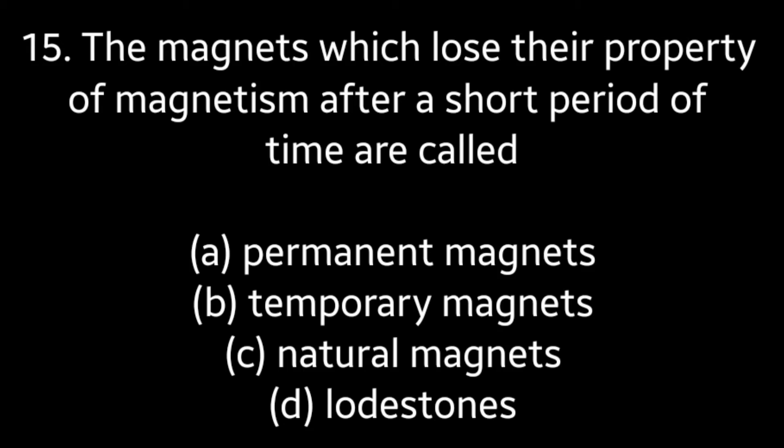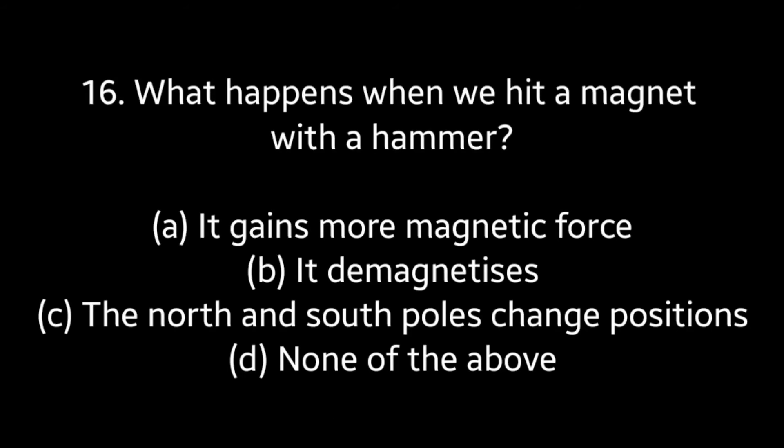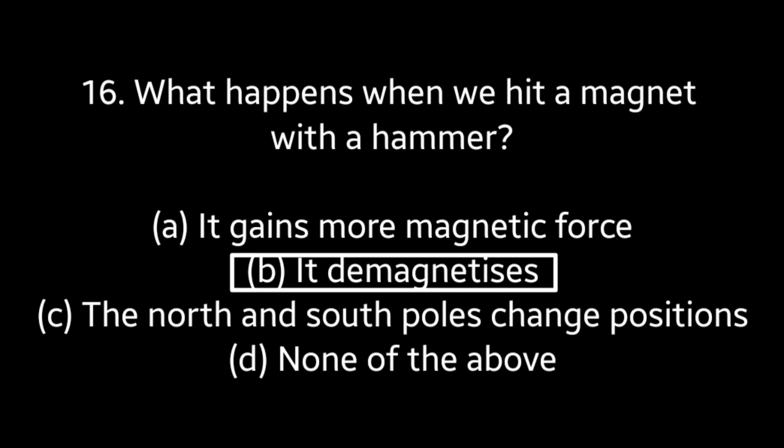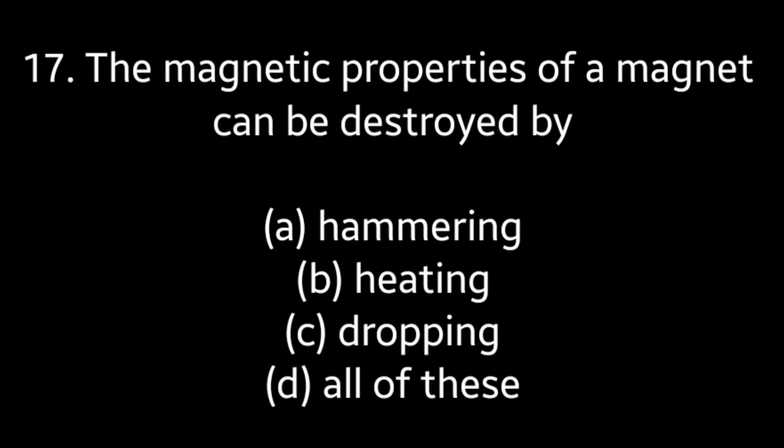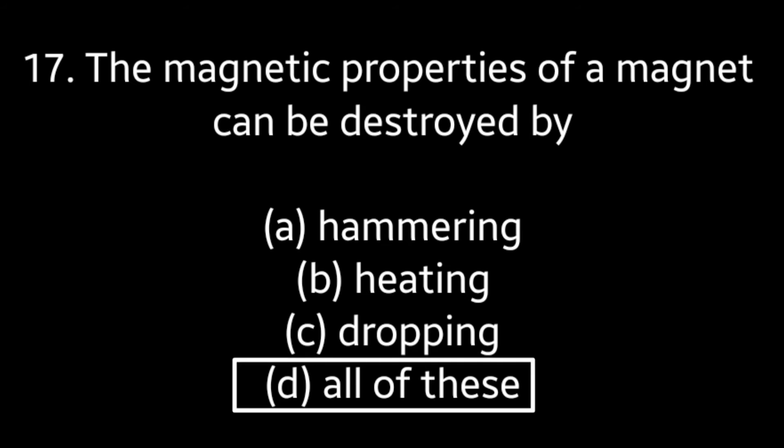Answer to question fifteen is option B: temporary magnets. Question number sixteen: what happens when we hit a magnet with a hammer — it gains more magnetic force, it demagnetizes, the north and south pole changes positions, or none of the above? Answer is option B: it demagnetizes. Question number seventeen: the magnetic properties of a magnet can be destroyed by — hammering, heating, dropping, or all of these? Answer is option D: all of these.